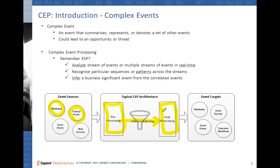In post-processing, the CEP-specific data type is converted to the event target-specific data type. Then a connection happens — it could again be a pull or a push — meaning the application could expose the filtered events for pulling or pushing. The target applications that want to get notified can either pull the events or get them pushed. We shall be seeing how this pull and push works in the subsequent slides.